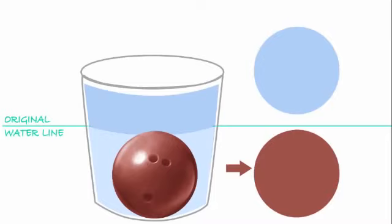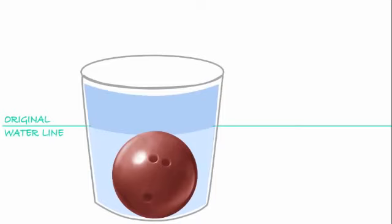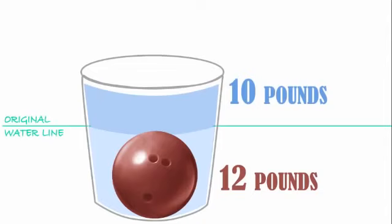But volume is not what makes the ball sink. The ball sinks because it's heavy. This bowling ball weighs 12 pounds. Water weighs something, too. A bowling ball-sized chunk of water weighs about 10 pounds.